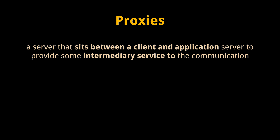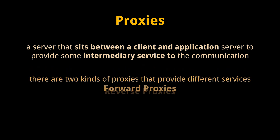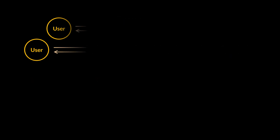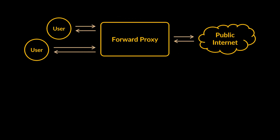The second topic on today's list, besides networking protocols, is proxies. A proxy is a server that sits between a client and application server to provide some intermediary service to the communication. There are two kinds of proxies: forward proxies and reverse proxies. A forward proxy sits between a pool of clients and the public internet. The goal of a forward proxy is to protect the client pool by filtering outgoing requests and incoming responses — for example, a school network might decide to block requests going out to certain websites.